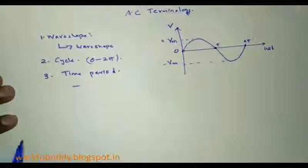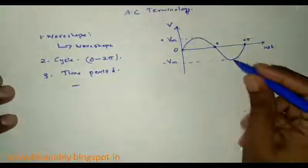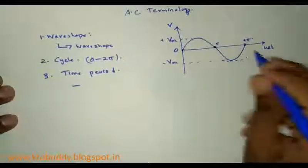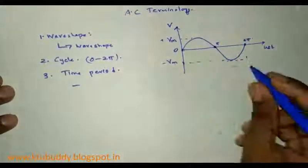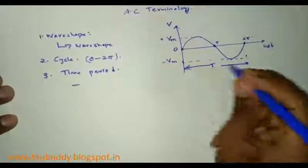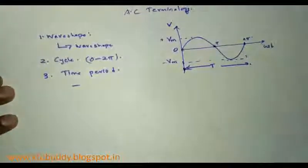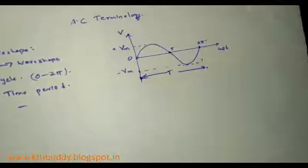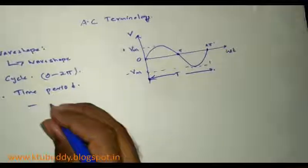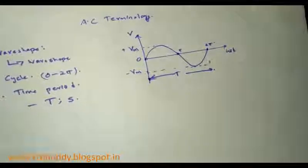The third term is time period. Time period is the time taken by the waveform to complete one cycle. I can represent time period T as the time taken from 0 to 2 pi. Therefore, T is the time taken to complete one cycle, from 0 to 2 pi, and its unit is seconds.